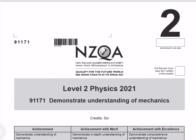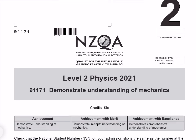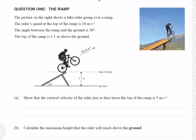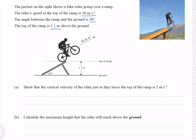In this video I'll be going through the 2021 Mechanics paper. Question 1. The picture on the right shows a bike rider going over a ramp. The rider's speed at the top of the ramp is 10 meters per second. The angle between the ramp and the ground is 30 degrees. The top of the ramp is 1.1 meters above the ground, and we see all that represented in our diagram here.